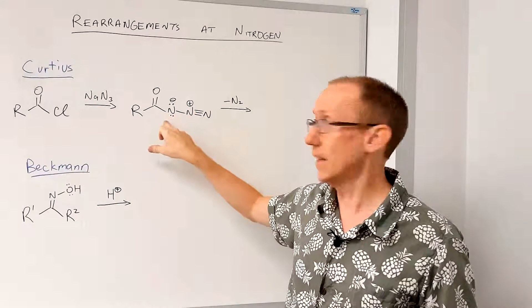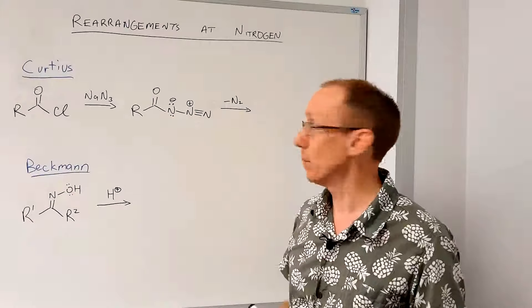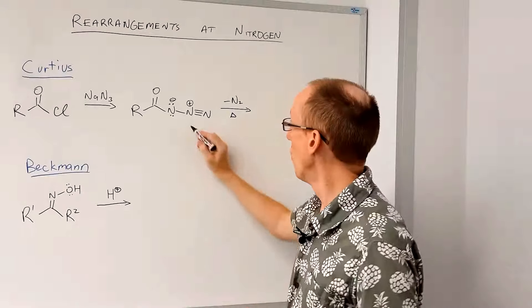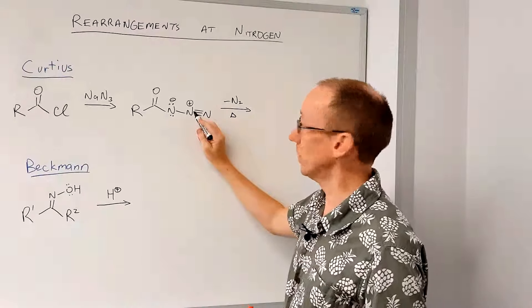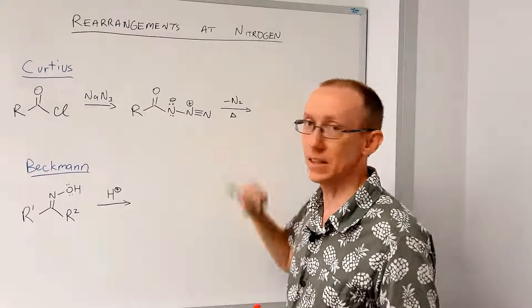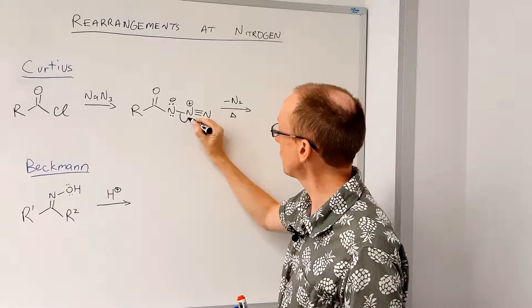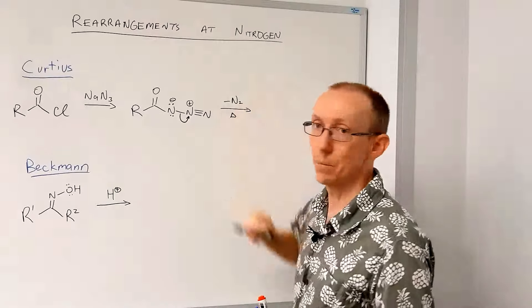Okay, so the acyl azide is unstable if it's heated. So if we heat this molecule, we will lose nitrogen. Okay, so we can start this in any order, but probably the simplest thing to do is to lose that nitrogen group, minus N2.